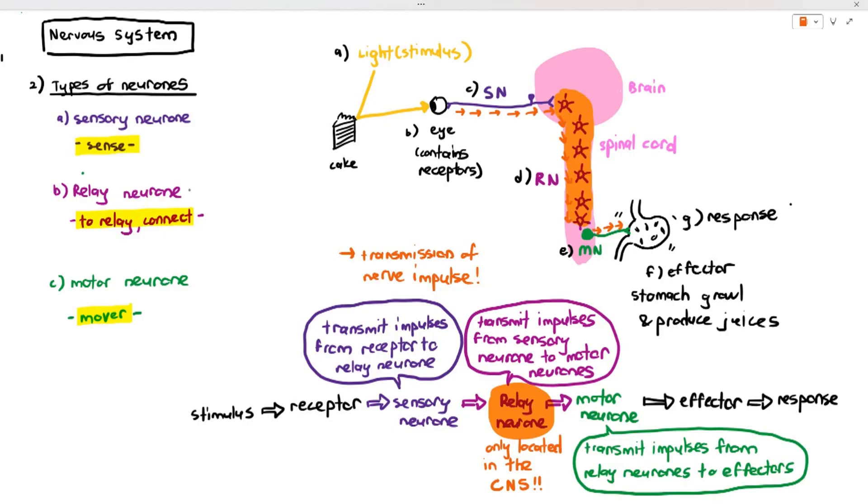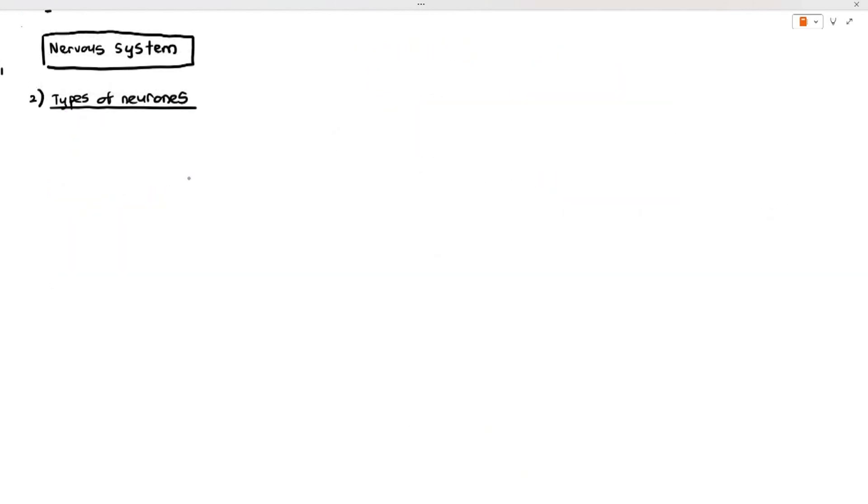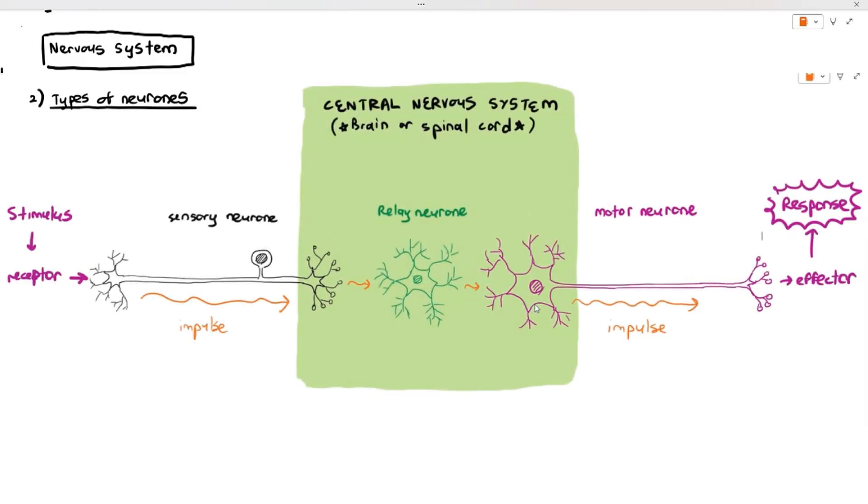These are the particular functions of the neurons, as you can see. If you go back to this particular diagram, we have the stimulus. The stimulus is detected by the receptor.